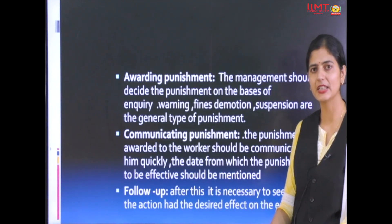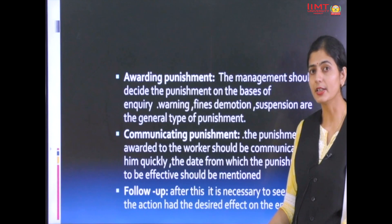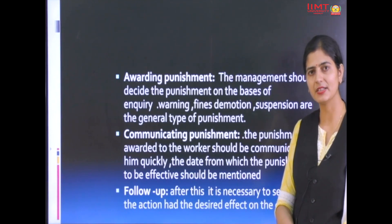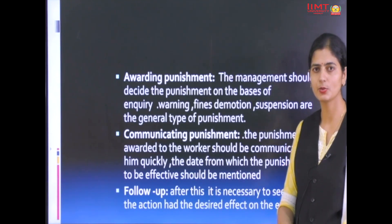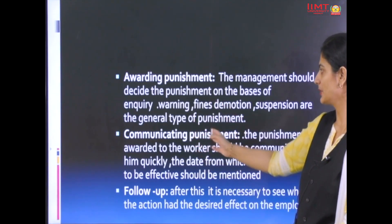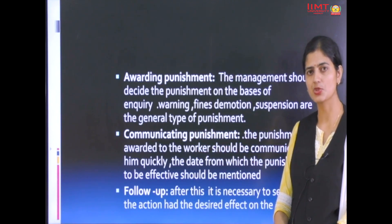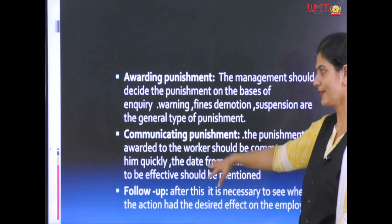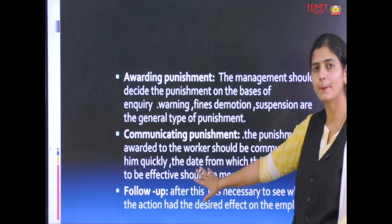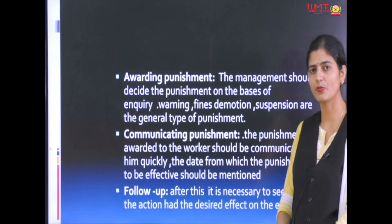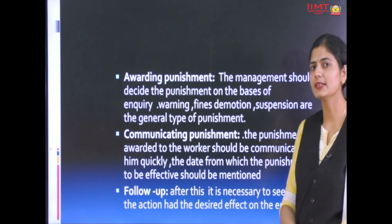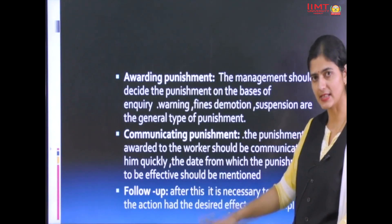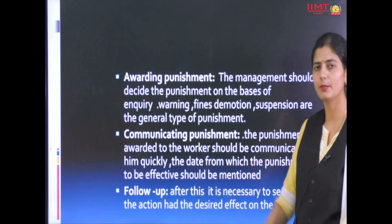Management decides whether it is a minor or major punishment. Minor punishments include oral warnings or written warnings. Major punishments include suspension or dismissal where all services are taken back. Whatever punishment is decided, it is communicated to the employee, and then follow-up programs are issued to check what impact the punishment had on the employee — whether desirable effects are achieved or not.